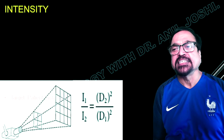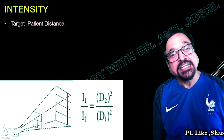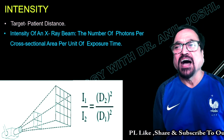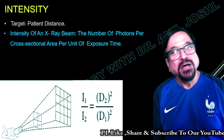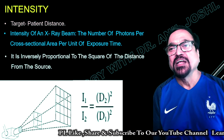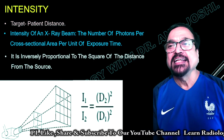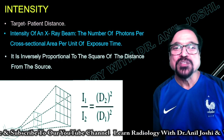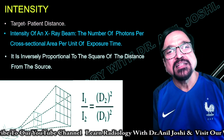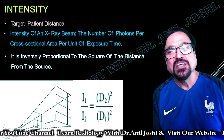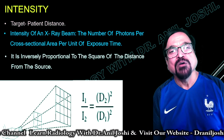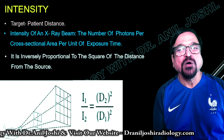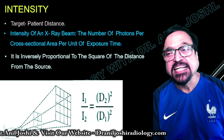Now we come to intensity. Target-patient distance determines the intensity of the X-ray beam. Intensity is the number of photons per cross-section per unit of exposure time. It is given by a formula: it is inversely proportional to the square of the distance from the source — it follows the inverse square law. If you want to increase the distance, you will have to increase the intensity of the beam proportionally. The X-ray comes from an aperture, so it has a cone shape, and you have to adjust using this formula.